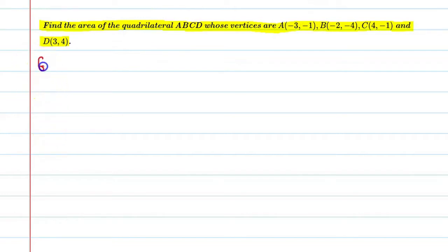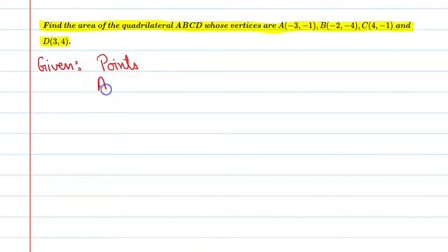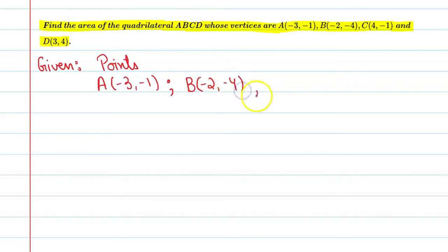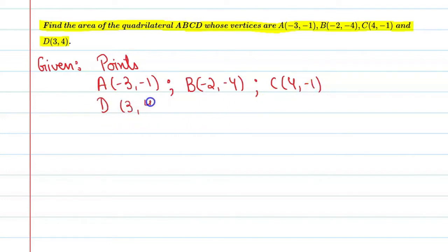Given points: A is equal to (-3, -1), second point B is equal to (-2, -4), C is equal to (4, -1), and the last point D is (3, 4).